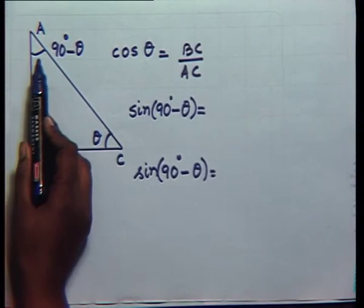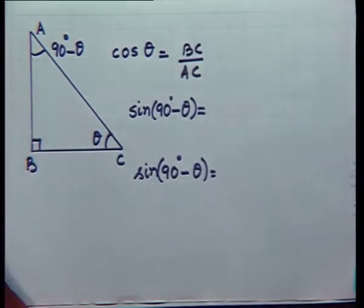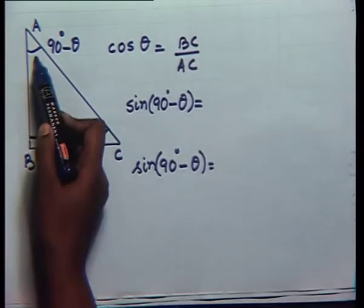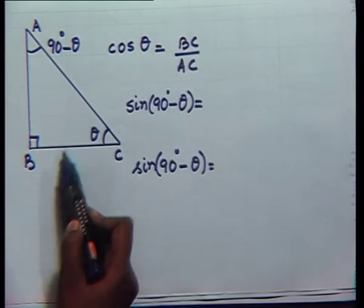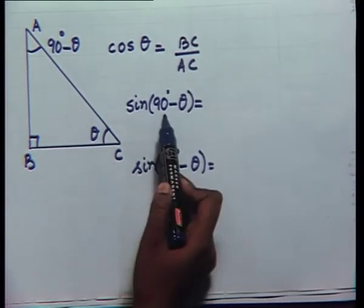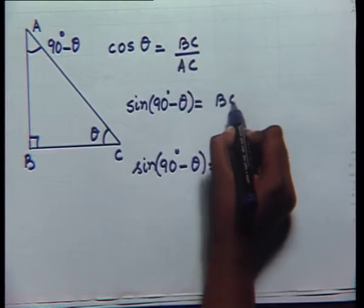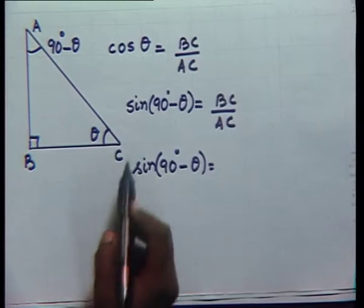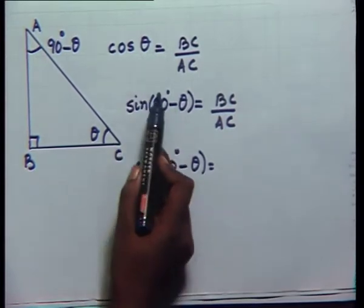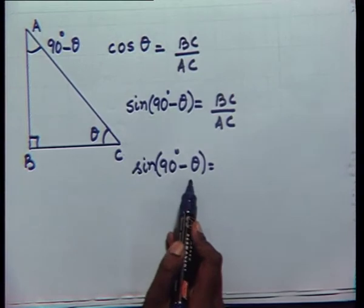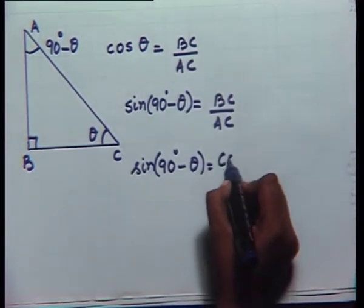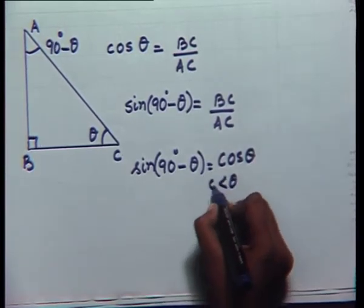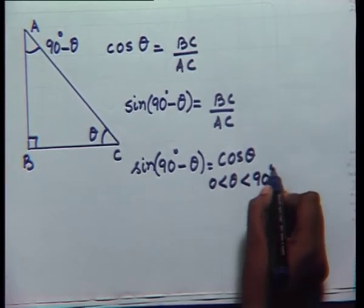And what will be sin(90° - θ)? We know that sin(90° - θ) is equal to the side opposite to the angle (90° - θ) upon hypotenuse. So again sin(90° - θ) will be equal to BC upon AC in this triangle. So comparing these two, we find that sin(90° - θ) is equal to cos θ, when θ is greater than 0 and less than 90 degrees.